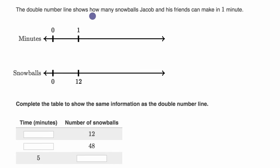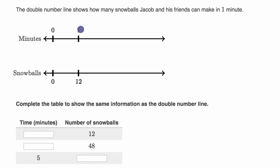The double number line shows how many snowballs Jacob and his friends can make in one minute. In zero minutes they can make zero snowballs; in one minute they can make 12. Complete the table to show the same information as the double number line. Pause this video and try to work it out. We can think about it as a ratio: the ratio of minutes to snowballs is one to 12.